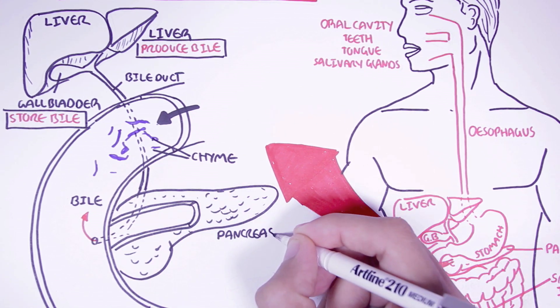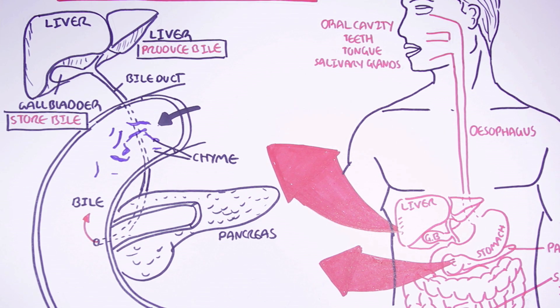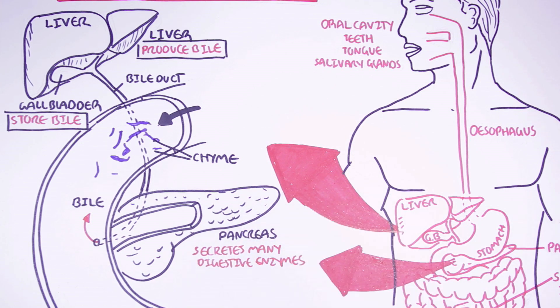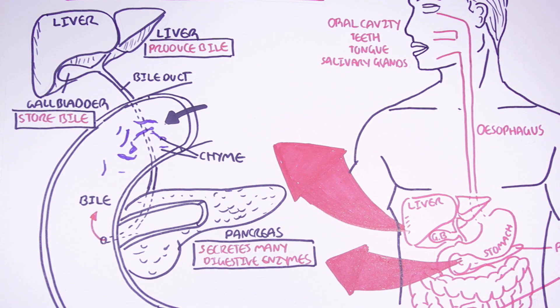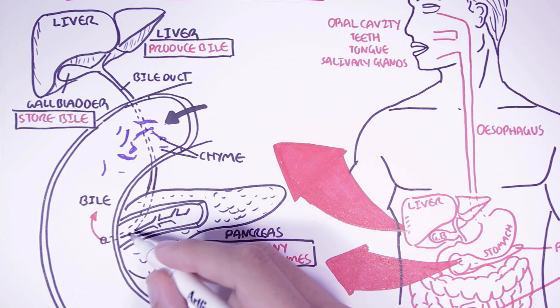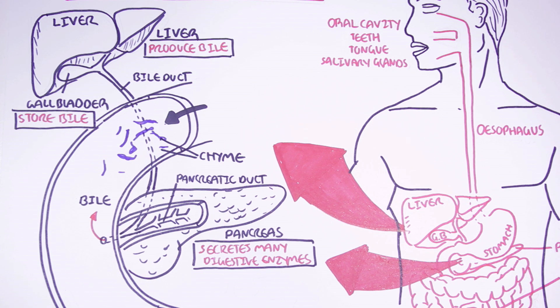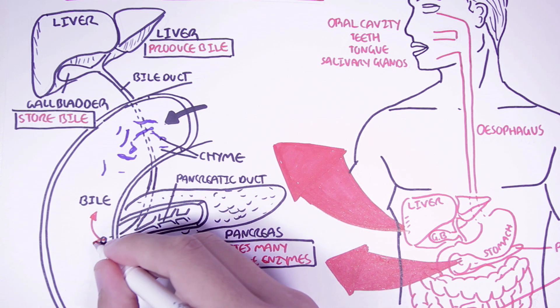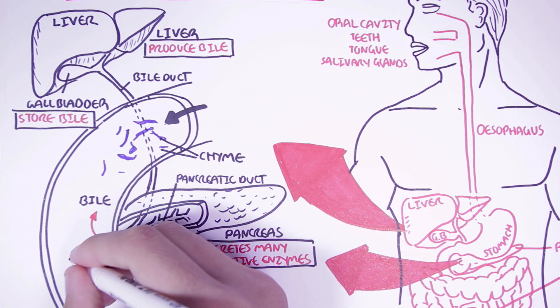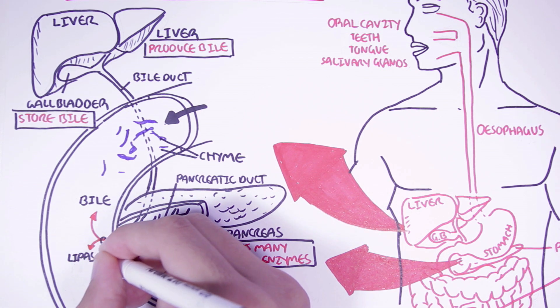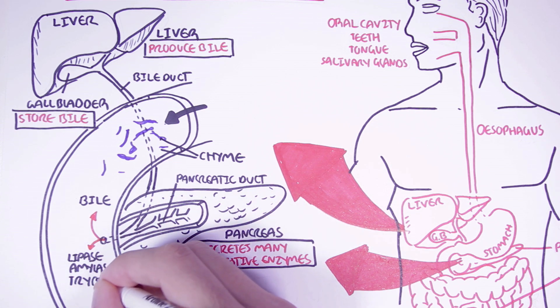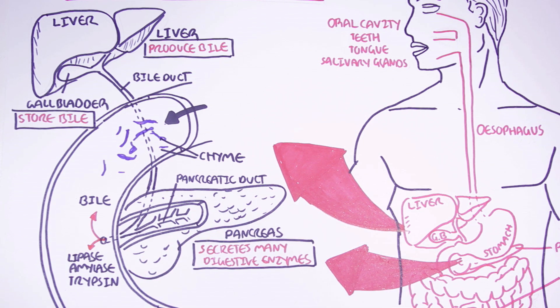The pancreas is an important endocrine and exocrine gland. During digestion, the pancreas secretes many enzymes. These pancreatic digestive enzymes will be secreted into the small intestine as well through the pancreatic duct. The pancreatic duct actually connects with the bile duct and consequently to the small intestine. The main enzymes secreted by the pancreas for digestion are lipases for lipid digestion, pancreatic amylase for carbohydrate digestion, and protease that helps in protein digestion.